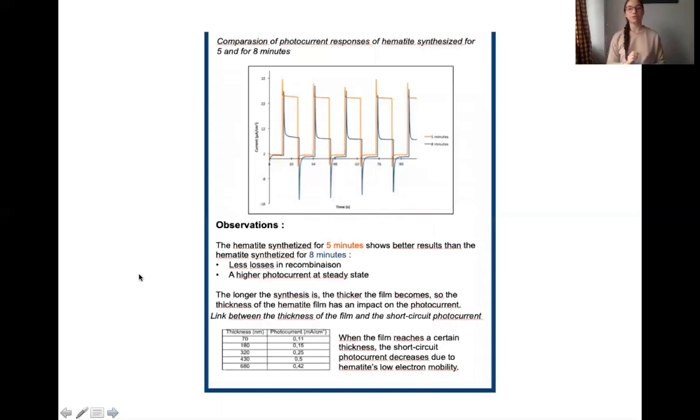Here's the comparison between two different hematites we synthesize for five or eight minutes via electrodeposition. We can see clearly that the one synthesized for five minutes has better results than the one synthesized for eight minutes. First, because there is a higher photocurrent at steady state but also less losses in recombination, so smaller decay.